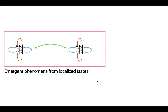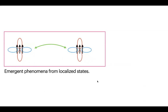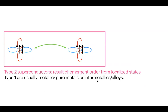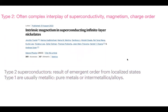Correlated electron physics is this emergent phenomenon from localized states. Type 2 superconductors — the most studied ones right now — result from this type of emergent order, as opposed to Type 1 superconductors, which are typically pure metals or intermetallics. These materials show a complex interplay of superconductivity, magnetism, and charge order, as illustrated in a recent Nature paper on magnetism in infinite-layer nickelates.